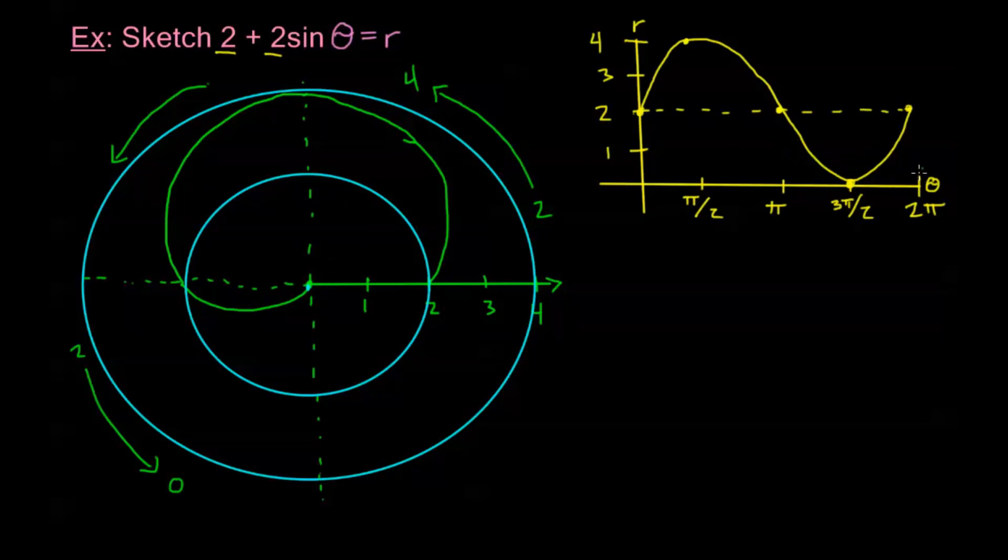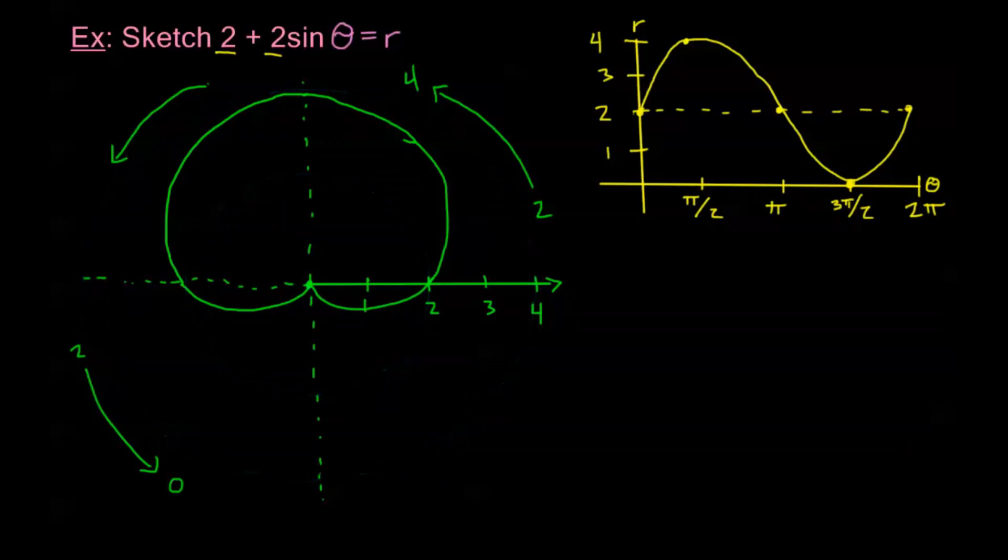And from 3π over 2 to 2π, I'm going from 0 back to 2. So if you don't find that polar graphing paper, let's take these away though and see what we have. There we are. This little shape here with this dimple at the bottom, this is my polar graph of the equation r equals 2 plus 2 sine theta.